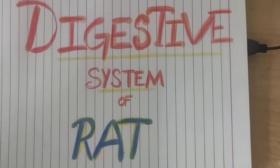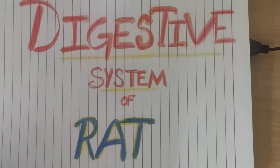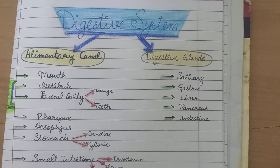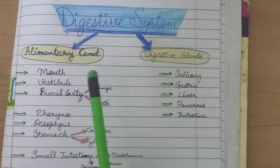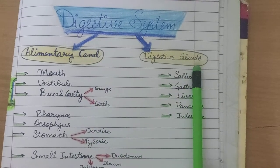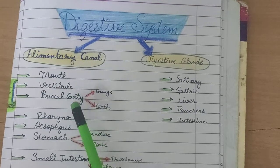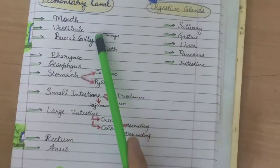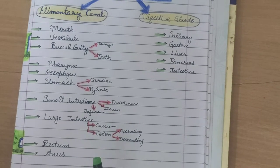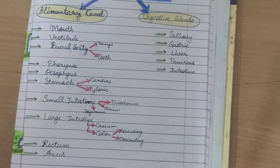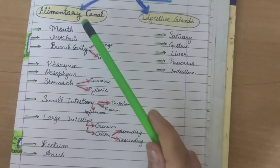Hello friends, I am Aastha and today we are going to study about the digestive system of rat. The digestive system of rat includes the alimentary canal and digestive glands. The alimentary canal has various organs. We will study their names, see a diagram, and then study them in depth.